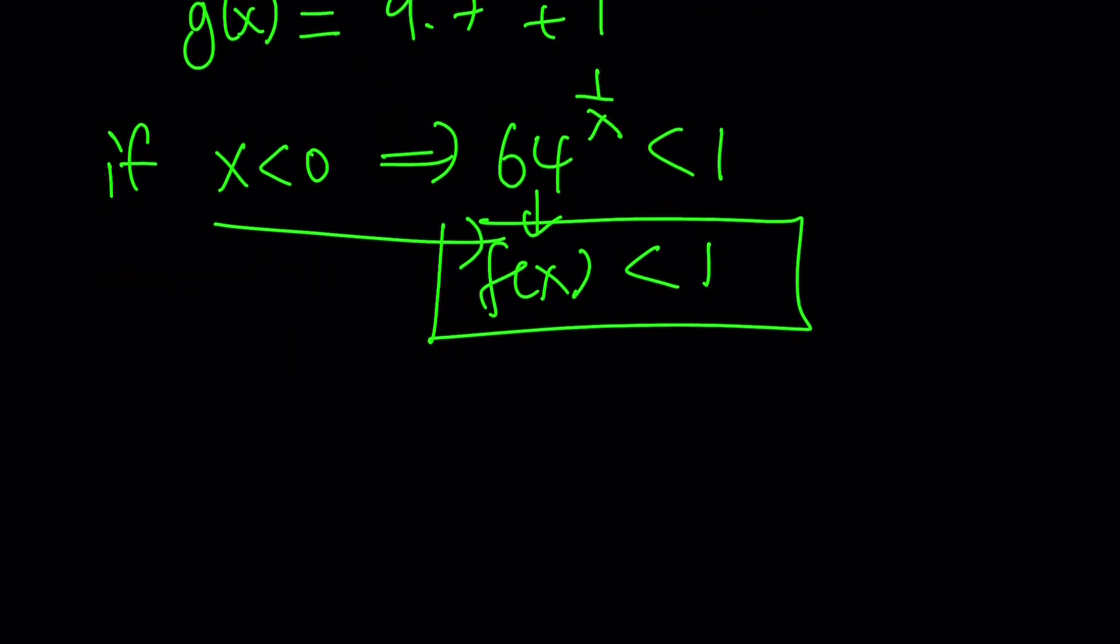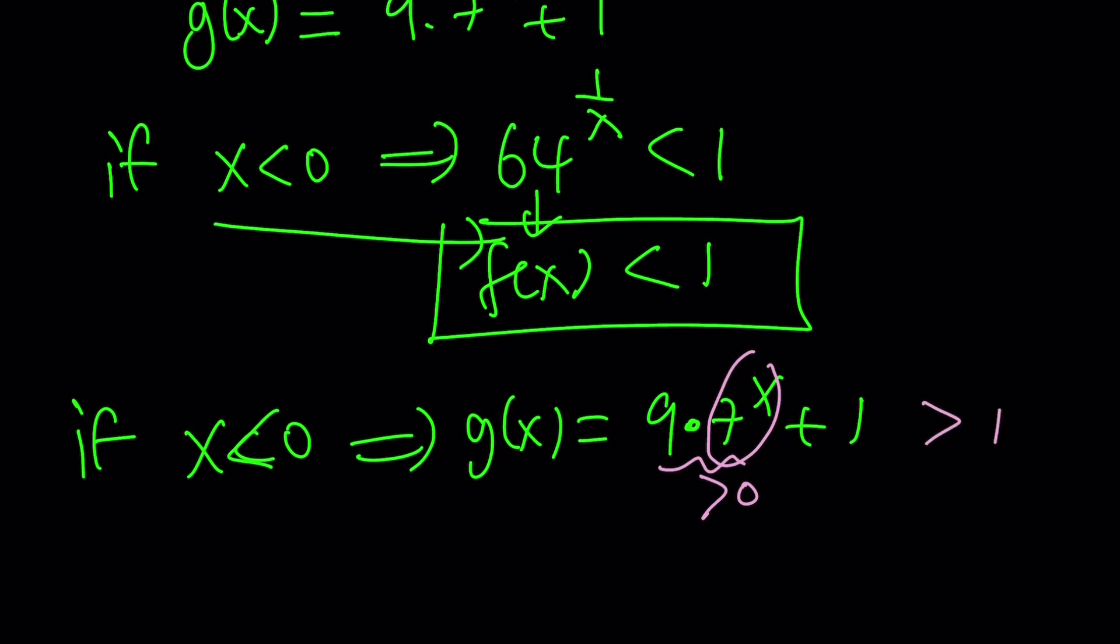So, what happens to g of x? Let's find out. If x is less than 0, then g of x, which is 9 times 7 to the x plus 1. Now, take a look at this. If x is negative, then this is going to be a fraction, right? 7 to the power of negative 1, for example, 1 over 7. So, this expression can be made to be less than 1. It can be made very, very small. But guess what? It's always going to be positive. When you add 1 to it, the sum is always going to be greater than 1. Why is this important?